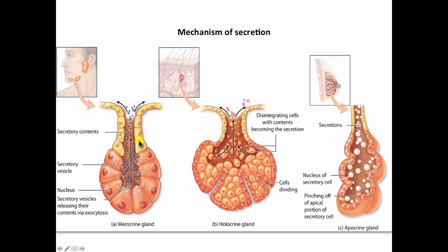The duct is generally not just a conduit. It has the ability, in these glands at least, to add or subtract products from the secretion. So sweat glands pull generally water back into the interstitium so that the product which eventually is secreted onto the surface is salty, as you well know.